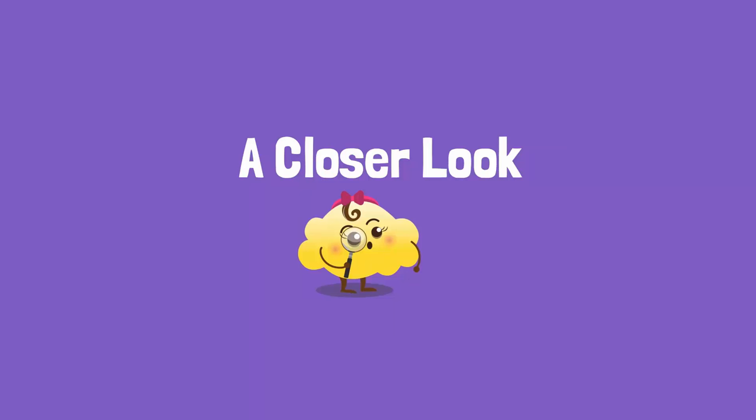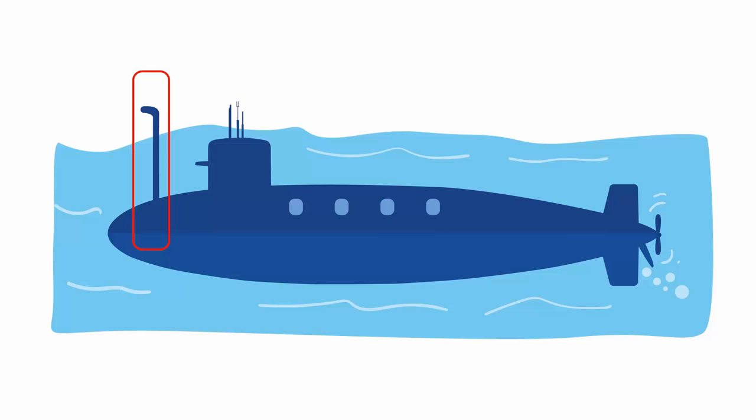A prism periscope is an instrument used for viewing objects that are higher or lower than our eye level. Therefore, they are usually used in tanks and submarines to observe movements without being seen.